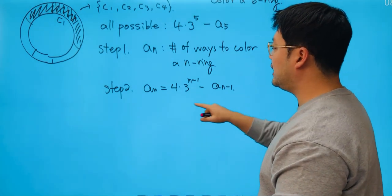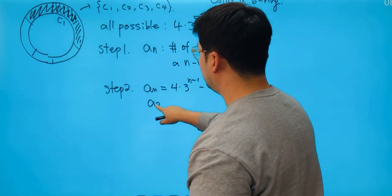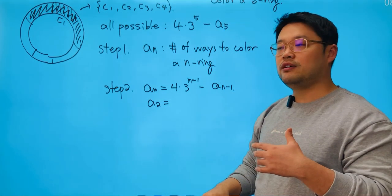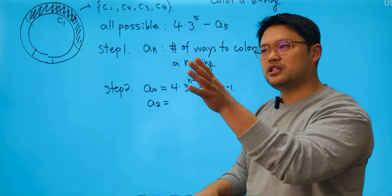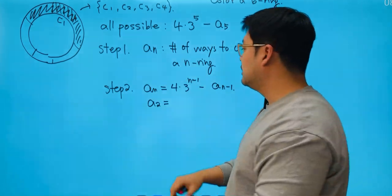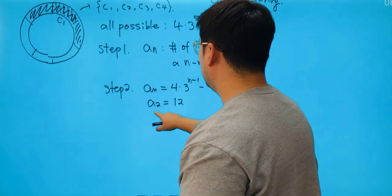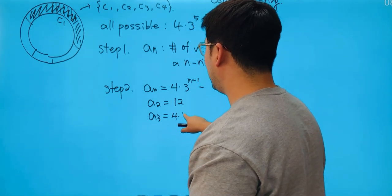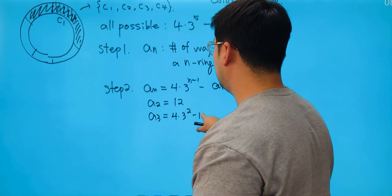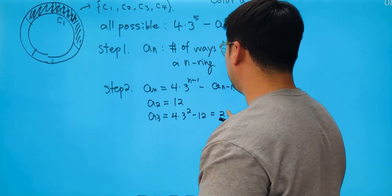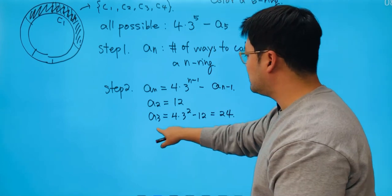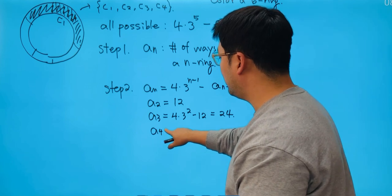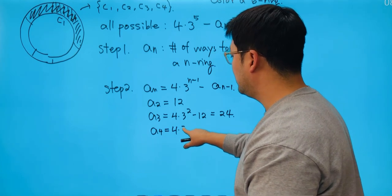So let's just try to find out what A_2 is. A_2 is just going to be two ring figures, and that's just going to be 4 times 3, this must be 12. What about A_3 then? A_3 is going to be 4 times 3 squared minus 12. Well, that's just going to be 24. Now what about A_4? Well, A_4 is just going to be 4 times 3 cubed